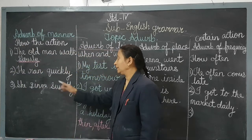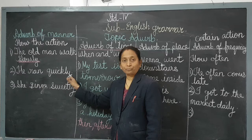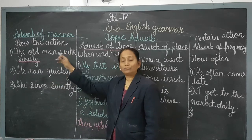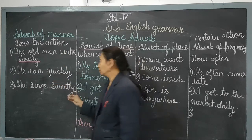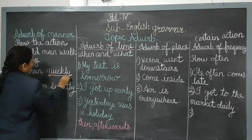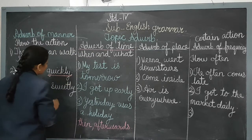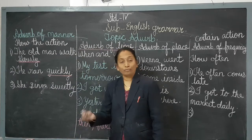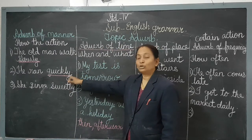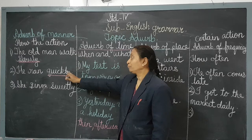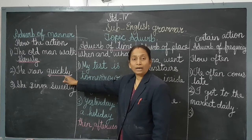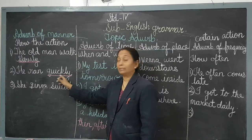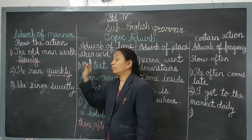Now see the next one: 'He ran quickly.' How did he run? Quickly. The adverb of manner here is 'quickly.' It shows us how he ran — slowly, fast, or quickly. He ran quickly, so this shows the manner of running. This sentence also comes under adverb of manner.